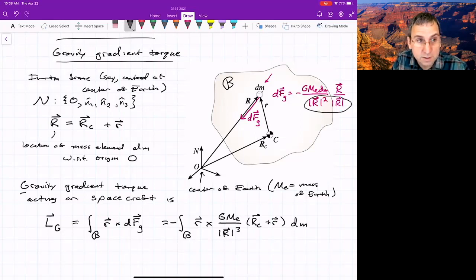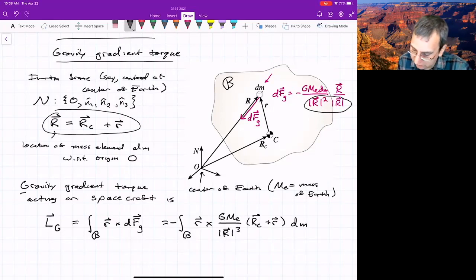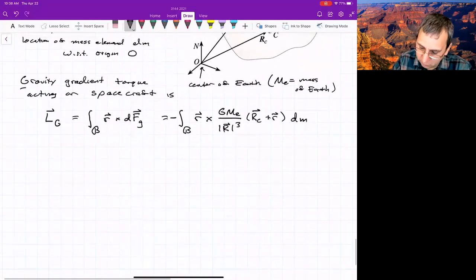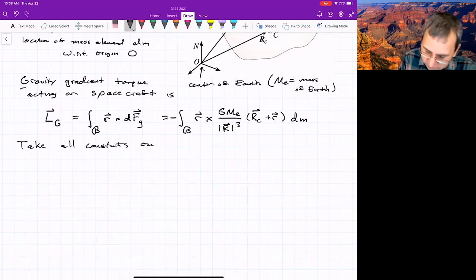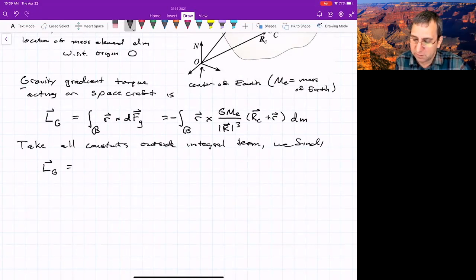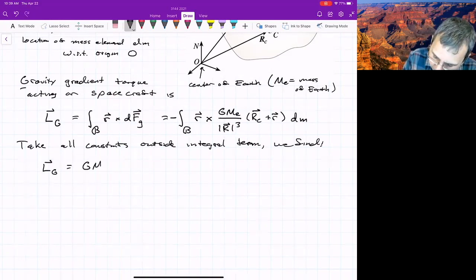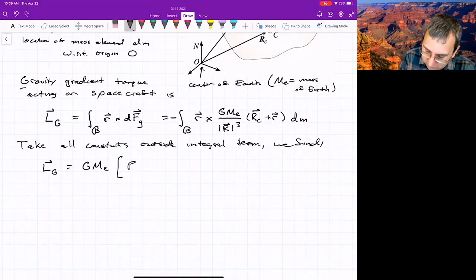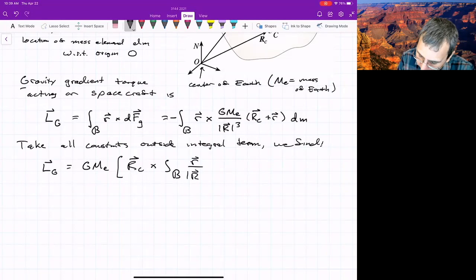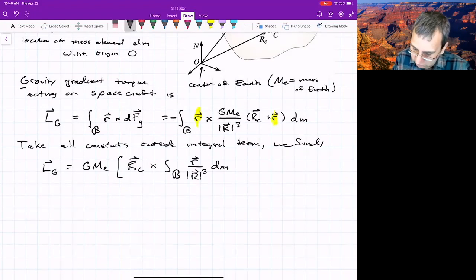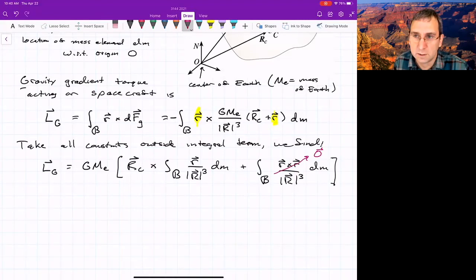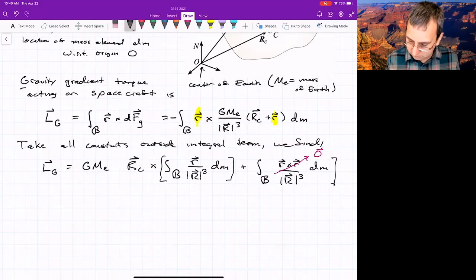I combined these to make capital R to the third and then wrote big R for the vector part as RC plus little r. And now we turn a crank of math. If we take all the constants outside the integral term, things that we're not integrating over, I'm going to flip the order of the cross product. So let me first get G, M, E. That could definitely be brought out. I'll have RC cross the integral over the body of little r over big R cubed dM. And then the other term is going to have r cross r, which is going to be zero. R cross r over R cubed. We always like fancy ways of writing zero. Then it drops out. So then we're just left with this term. And in fact, we could bring out RC. So this part just sort of went away.